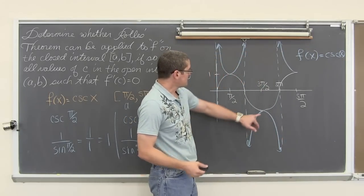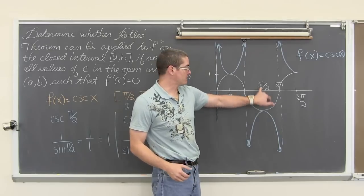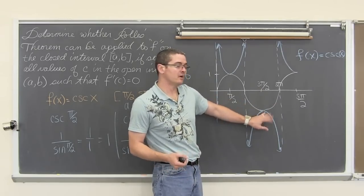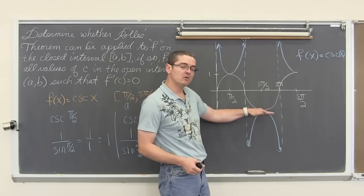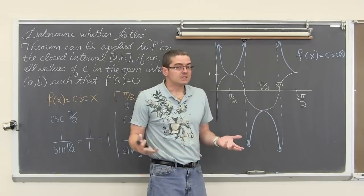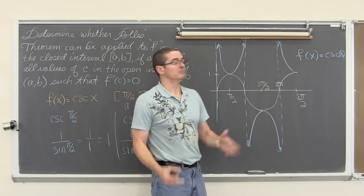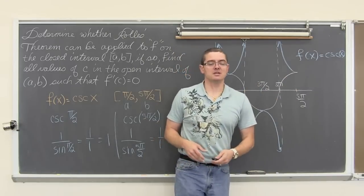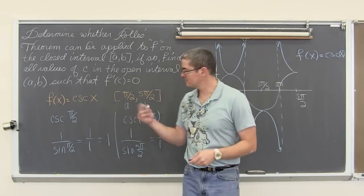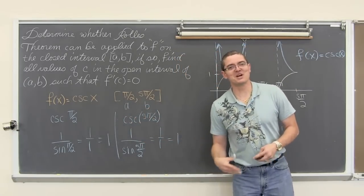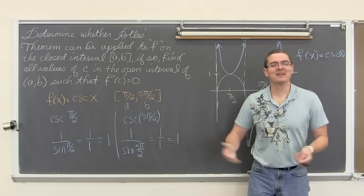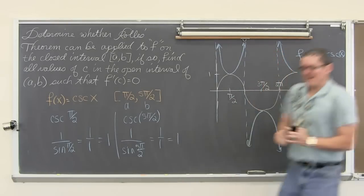So, even though I can find a place here at three pi over two where the derivative would be equal to zero, it is not Rolle's theorem because we do not have a continuous function. So, I am Mr. Tarrou, go do your homework. WHOO! BAM!